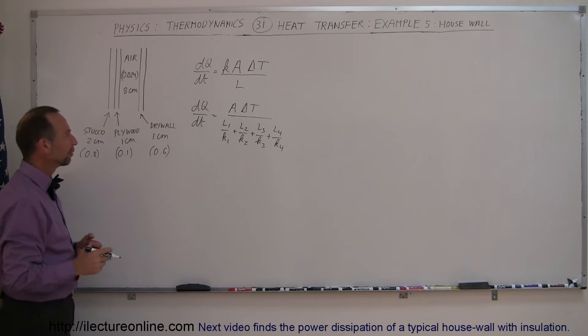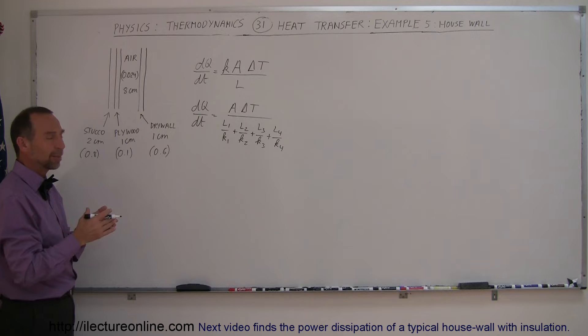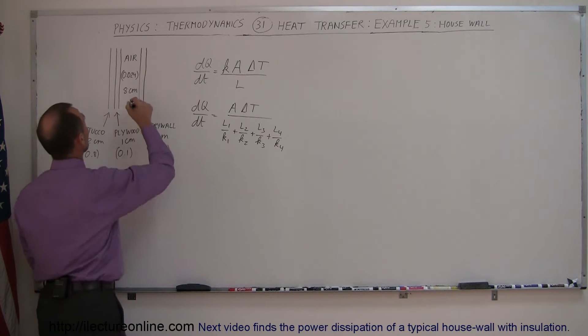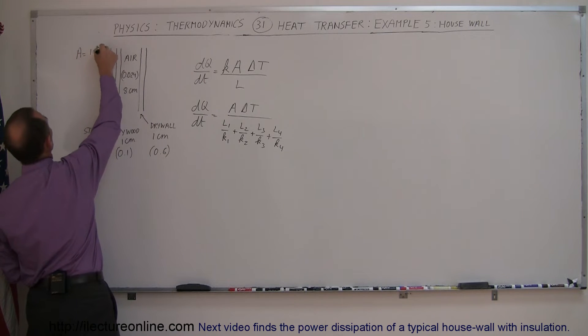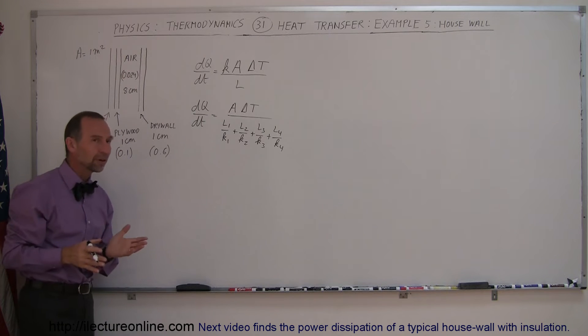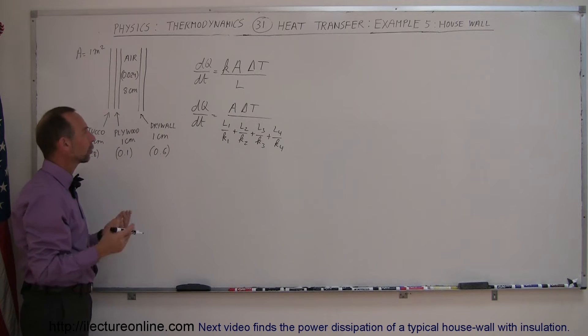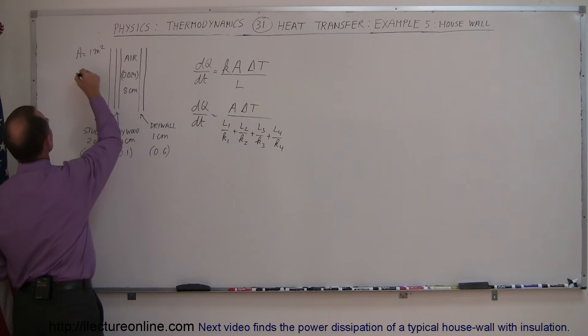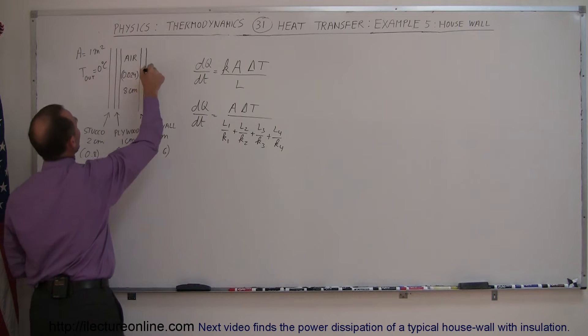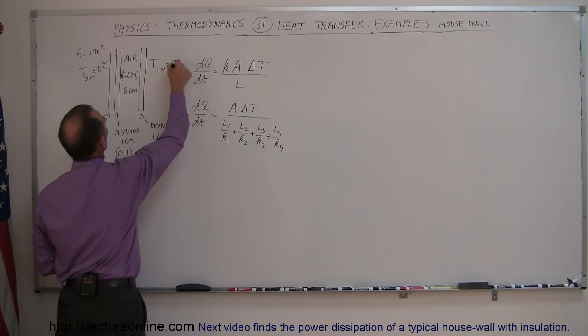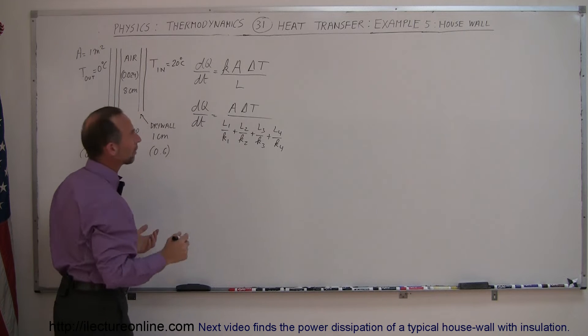And for the cross-sectional area, we'll just take a typical one square meter segment. So let's let A equal one meter squared. And for the difference in the temperature, let's say that on a cold day the T outside, or in this case the stucco, would be T out is equal to zero degrees centigrade, and then the T in would be equal to twenty degrees centigrade, which is room temperature.